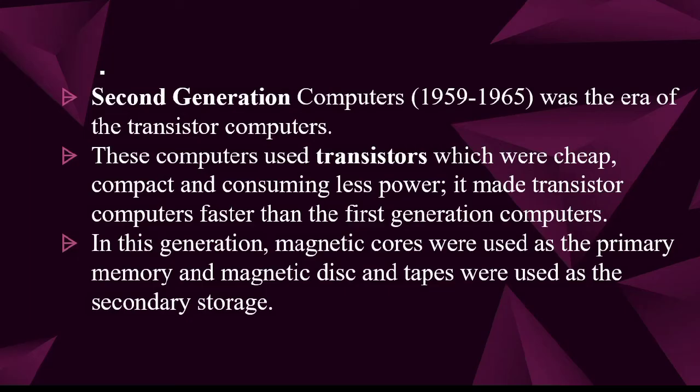In first-generation computers, if the current is low the vacuum tube had limitations. The transistor replaced vacuum tubes in the second-generation computer. In the second generation, primary memory used RAM and ROM, and magnetic cores were used. Secondary storage included pen drives, CDs, magnetic disks, and magnetic tapes.